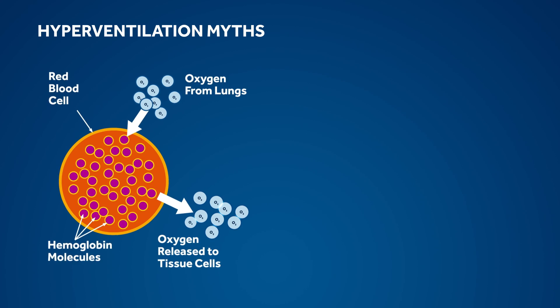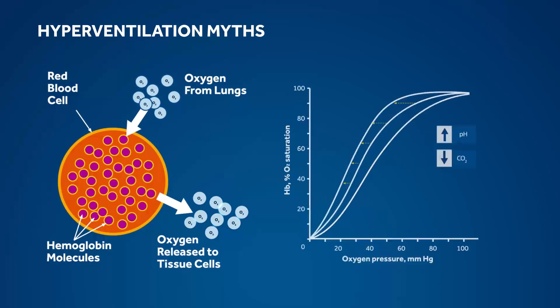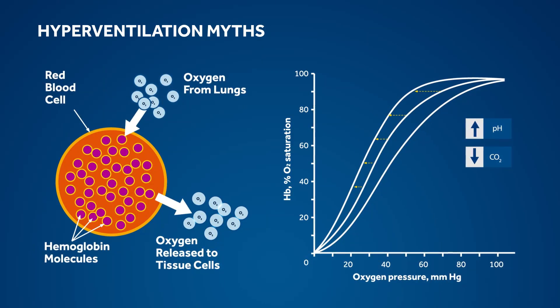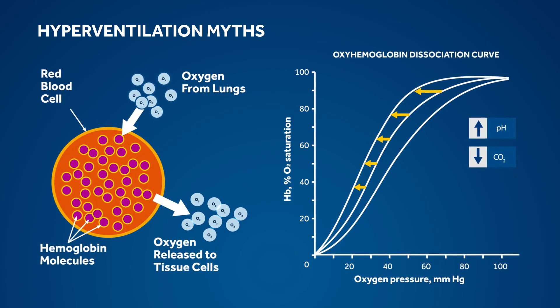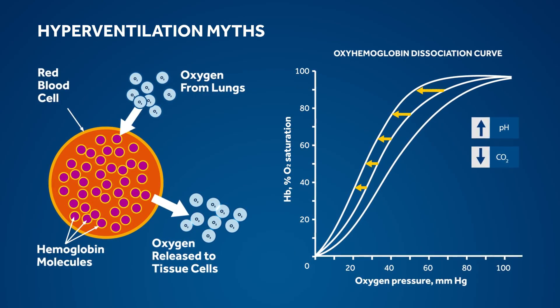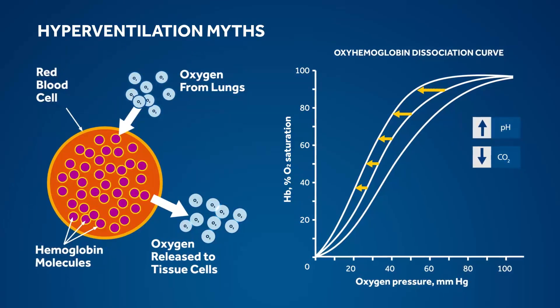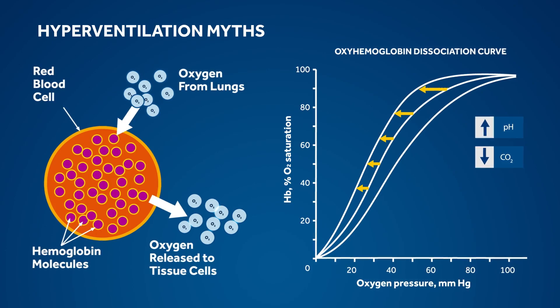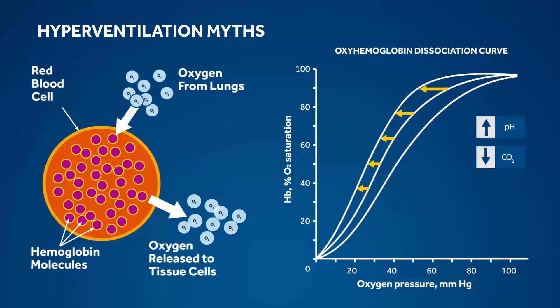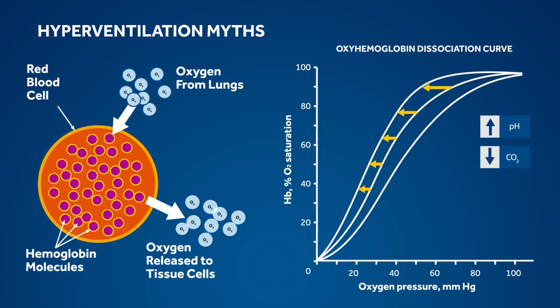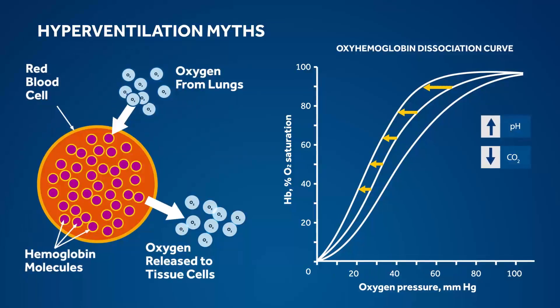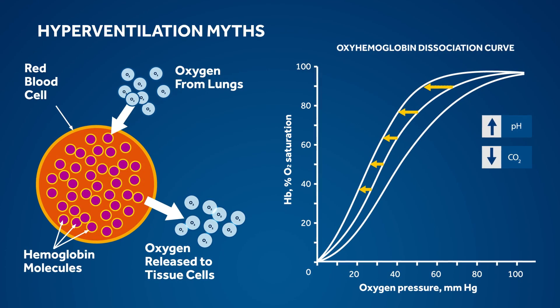For example, hyperventilation causes an increase in alveolar ventilation and decreases in CO2, leading to a left shift of the oxyhemoglobin dissociation curve. This causes an increased affinity for oxygen on the hemoglobin molecule. Although one might think hyperventilation promotes better O2 uptake, it actually reduces O2 release to the tissues.